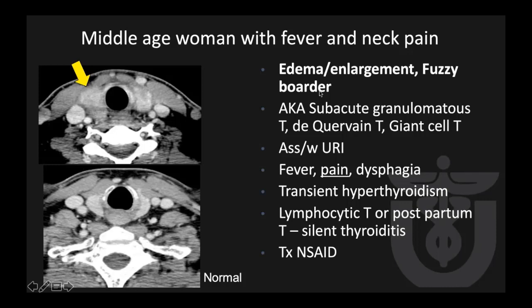Let's move on to infection and inflammation. Here is a middle-aged woman who came to the emergency room with fever and anterior neck pain. CT scan shows enlargement of the thyroid gland with a fuzzy border on both sides and surrounding edema. Compared to normal thyroid tissue, which has a well-demarcated border with clean fat, there is clearly inflammation. This is a case of subacute granulomatous thyroiditis, also known as De Quervain thyroiditis, and it is usually associated with URI.